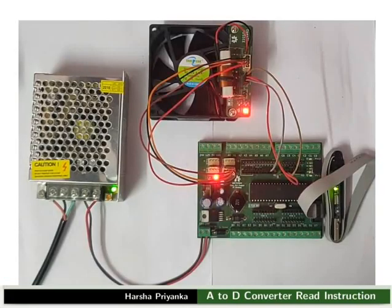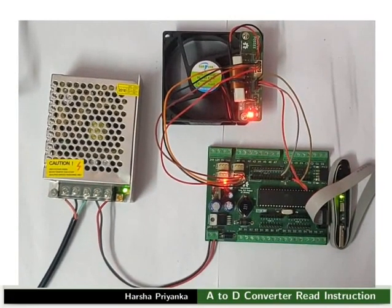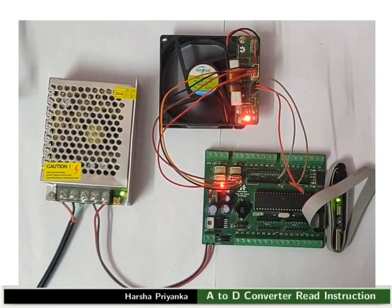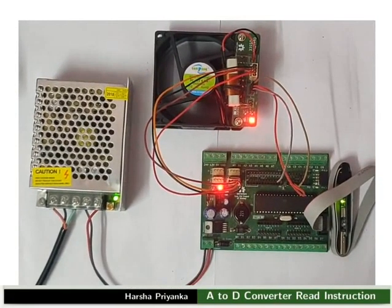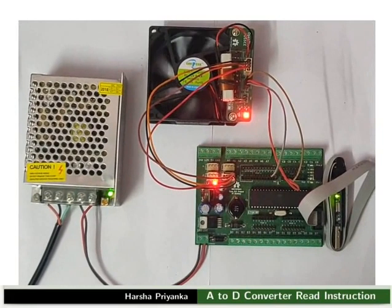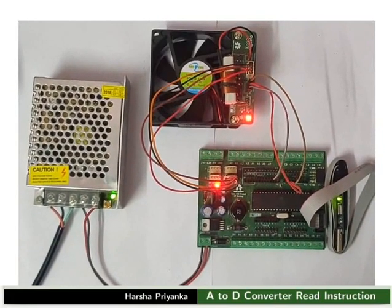Depending on the initial temperature, either the fan or resistor starts heating up. For the first time, we can observe that the heat on LED is turned on. This is because the temperature of the heating element is low. After some time, when the resistor gets heated up, the fan will turn on. It is also indicated by fan on LED. Again, when the resistor cools down, the resistor starts heating up. Thus, the process continues depending on the temperature of the resistor. Note that initially, the fan might turn on if the resistor is already heated up.